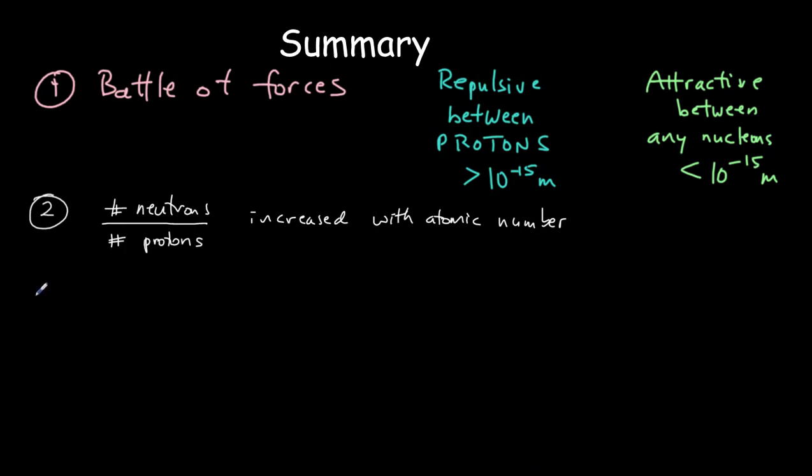And then thirdly, we talked about the reasons for the different types of radiation. So we have beta plus radiation, beta minus radiation, alpha, and gamma radiation.